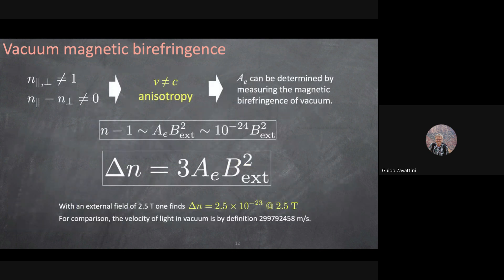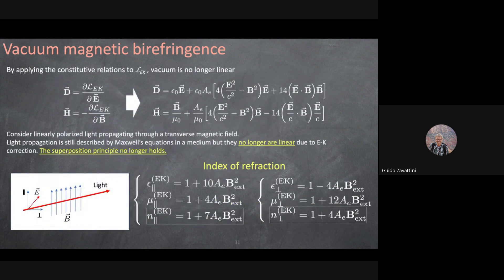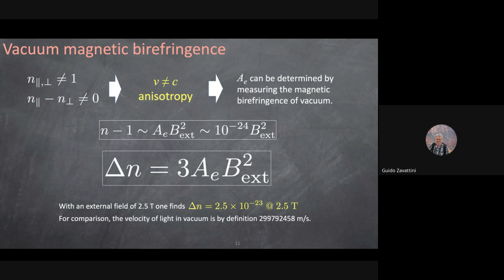The medium — vacuum with the magnetic field — is birefringent: it has two directions with respect to the magnetic field with different indices of refraction. The index is never exactly equal to one; n−1 is of order a·B², where a ≈ 10⁻²⁴ T⁻². So at one tesla, the index changes by about 10⁻²⁴ — an absolute number impossible to measure directly. You must invent a differential measurement.